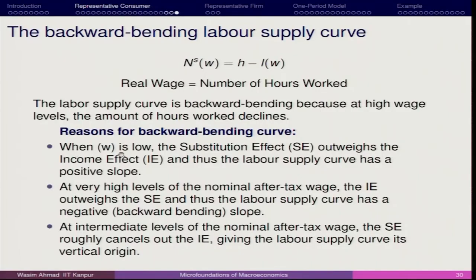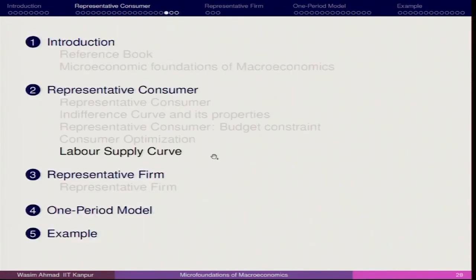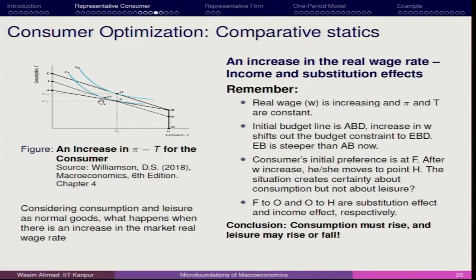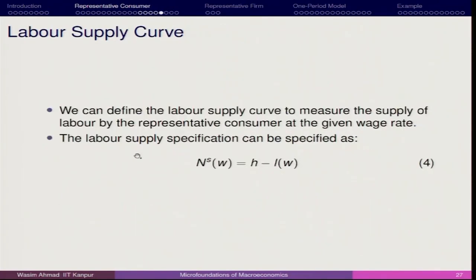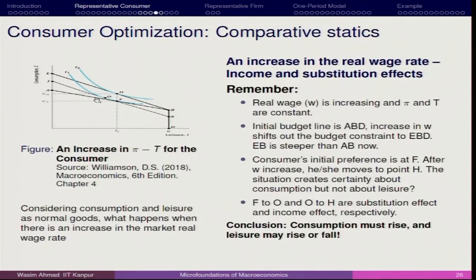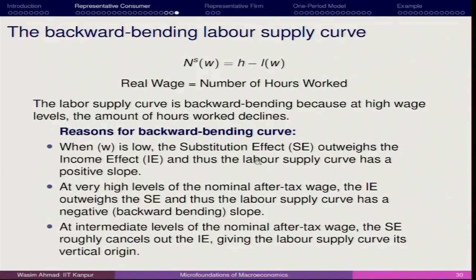When the wage is low, the substitution effect outweighs the income effect. There was also a decrease in leisure, and if it is leading to a decrease in leisure, this also has some kind of impact on your consumption pattern. Labor supply will always have this bending scenario. At a very high level of nominal after-tax wage, the income effect outweighs the substitution effect, and as a result the supply curve shows a negative slope — it starts bending back.